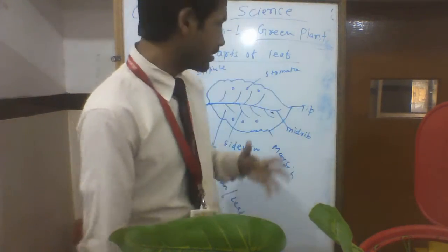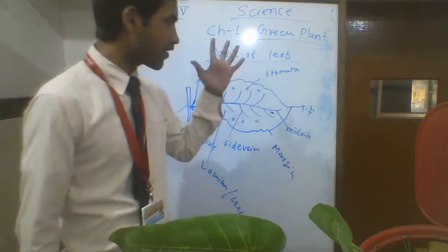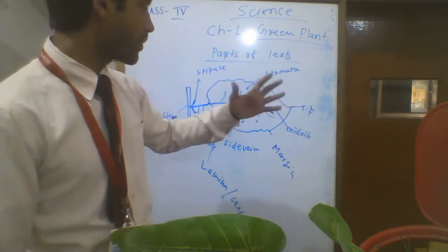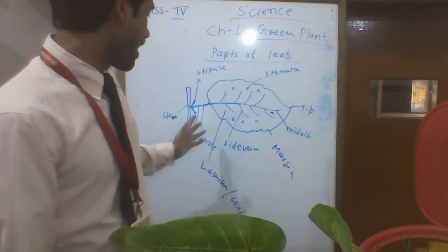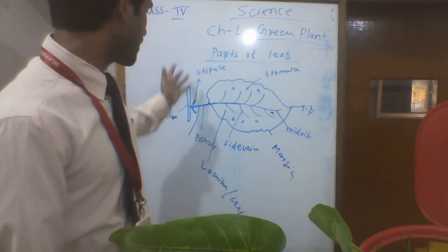The parts of leaves are: tip, mid rib, margin, segment, lamina, petiole, stem, and stipule.